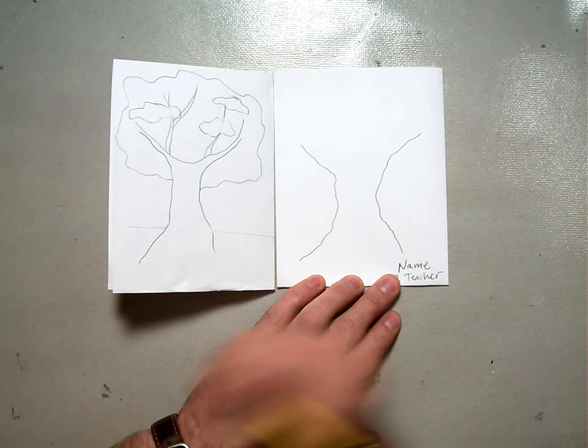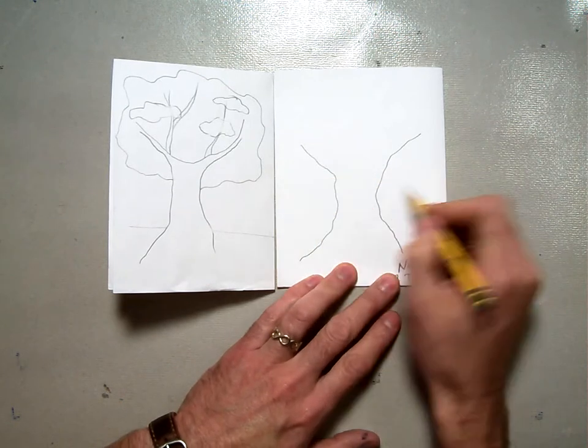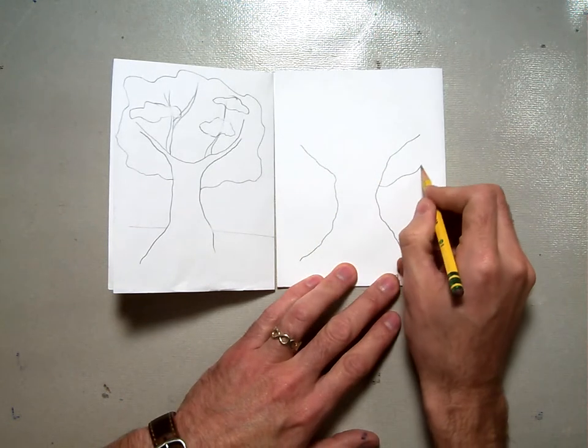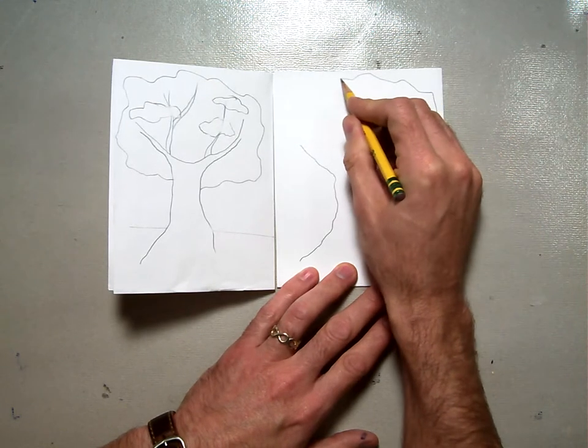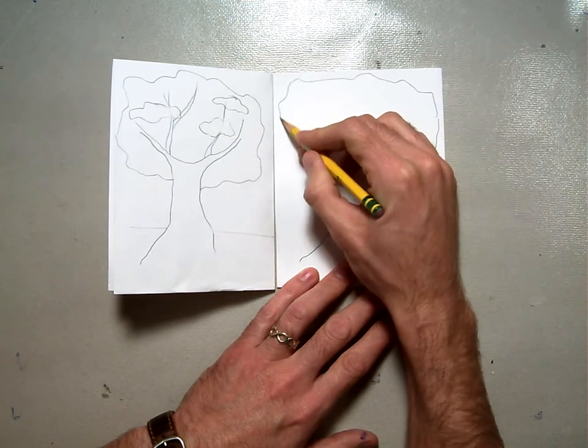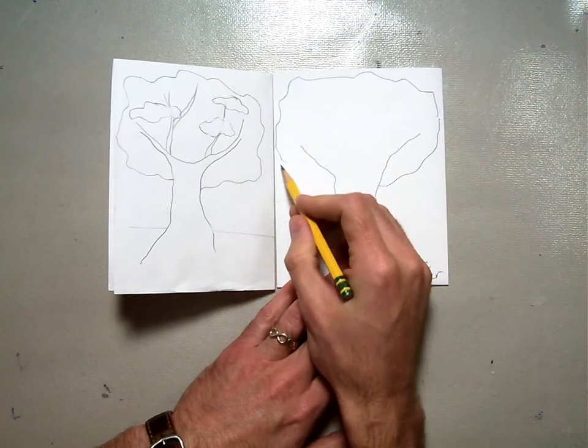Then, I draw the outside of the tree. Kind of wiggly again. You want it to be an organic shape like we talked about when we were learning about trees. Organic shape like the forest.